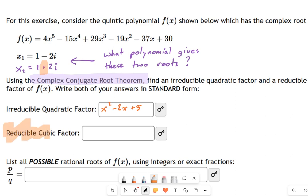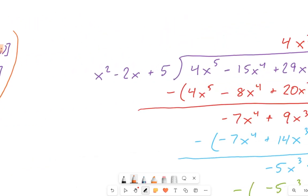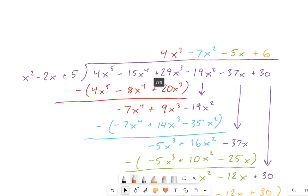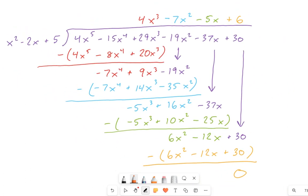Next part: how do I find the reducible cubic factor? What I have to do is divide this gigantic fifth order polynomial by this irreducible quadratic factor. If I divide the fifth order by the second order, I should get a cubic polynomial, a third order polynomial. And you can see that way over here. There's a little bit of long division involved in this problem. I'm going to pause right here for a moment. You should pause if you want to work through how long division operates, just remind yourself of this process.